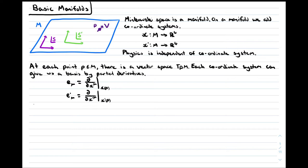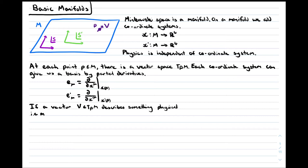We use μ, and μ equals 0, 1, 2, and 3, to label the first, second, third, and fourth entries in the coordinate functions x and x prime. If a vector v in the tangent space TPM is to describe something physical, it must be independent of basis. So v^μ e_μ equals v'^μ e'_μ, where v^μ and v'^μ are the components of the vector in the two coordinate systems x and x prime respectively.